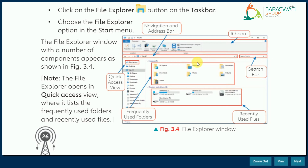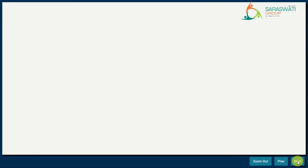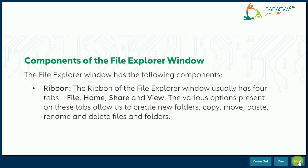So this window is the File Explorer window. Now we are going to see the components of the File Explorer window in detail — what is navigation, how can we use it, what is the ribbon, what is the search box. Let's go to that. The components of the File Explorer window are as follows. The first is the ribbon.